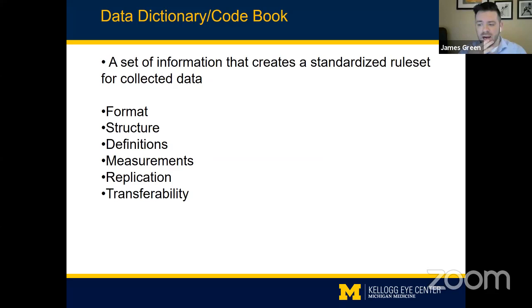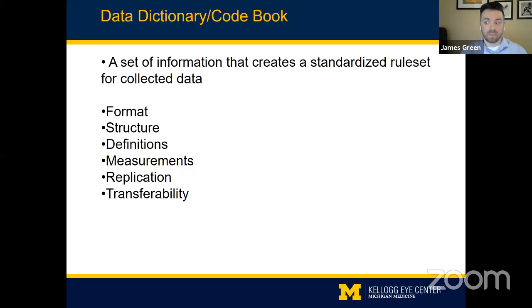The data dictionary is basically the front page of your database. It is a set of rules that governs what data you intend to collect as well as the appropriate standardized methods in which to collect them. The data dictionary dictates the structure of your database, the definitions of your variables, the specific definitions of measurements, and ensures that others who may contribute to the data set can collect data in the same way that you did.